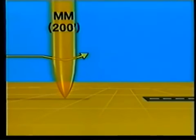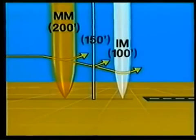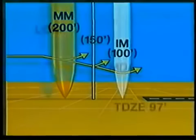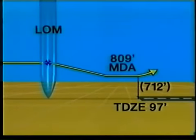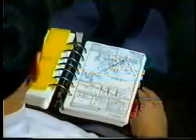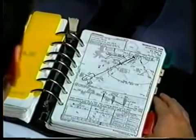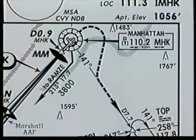A missed approach from an ILS generally requires you to maintain a straight climb to a specified altitude before turning, usually a minimum of 400 feet. A non-precision approach, however, often requires an immediate climbing turn. The reason for this is that an ILS missed approach normally begins about 200 feet above the runway elevation, but can be even lower on Category 2 or 3 approaches. These altitudes do not ensure adequate obstacle clearance if you begin an immediate turn. On some non-precision approaches, however, the MDA may be high enough to permit the turn as you initiate a climb. Because each missed approach is unique, be sure to read the procedure carefully and compare it to the missed approach track in the plan view to make sure you fully understand the procedure.